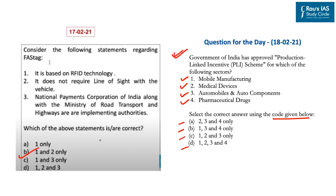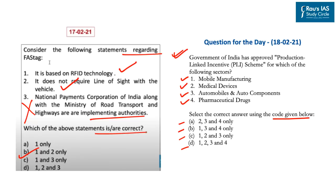Regarding yesterday's answer on FASTag: Statement one — it is based on RFID technology — is correct. Statement two — it does not require line of sight with the vehicle — is also correct. Statement three — that the National Payments Corporation of India along with the Ministry of Road Transport and Highways are implementing authorities — is incorrect; only the Ministry of Road Transport and Highways is the implementing authority. The correct answer is B, that is 1 and 2 only. With this, we come to an end to today's discussion. Thank you.